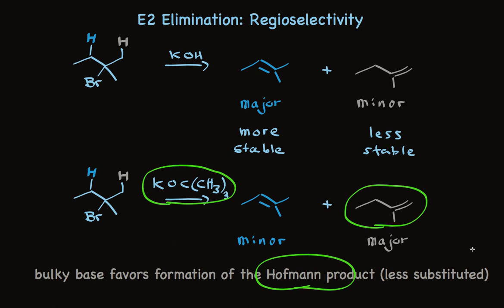So here are the facts. With a standard base like KOH, the major product is the more stable product, the one that has more alkyl groups. Using a very bulky base, the major product is the less substituted alkene.